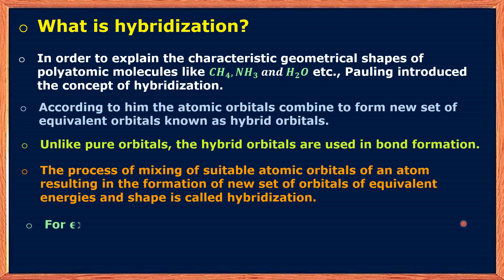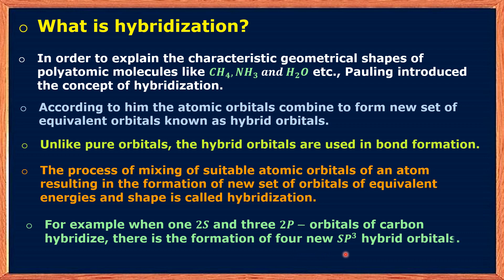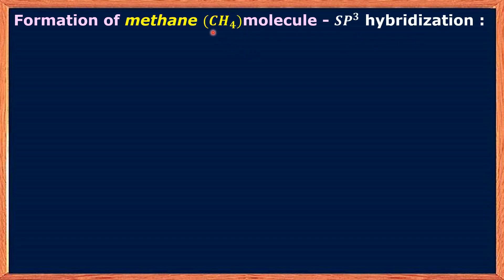For example, when one 2S and three 2P orbitals of carbon hybridize, there is the formation of four new SP3 hybrid orbitals. Now let us see the formation of the methane CH4 molecule. In CH4, carbon is the central atom. Before forming the bonds with four hydrogen atoms, the carbon atom undergoes SP3 hybridization.